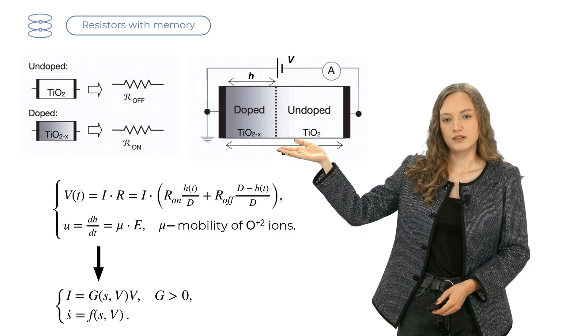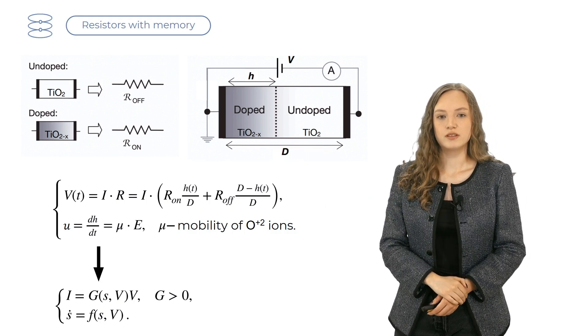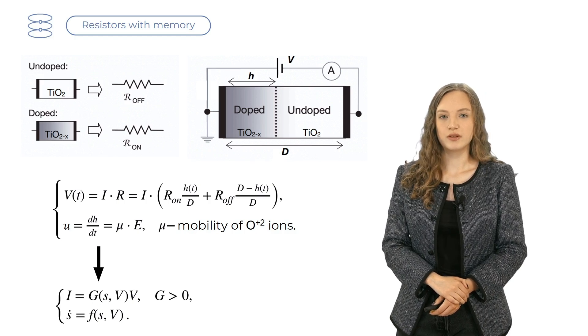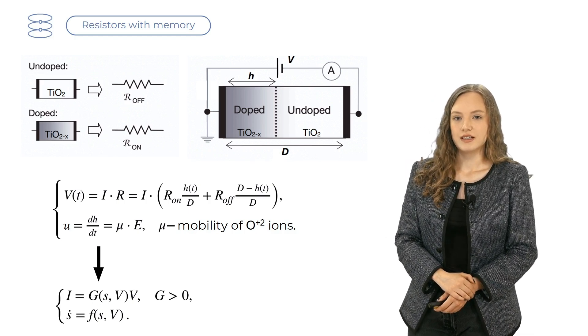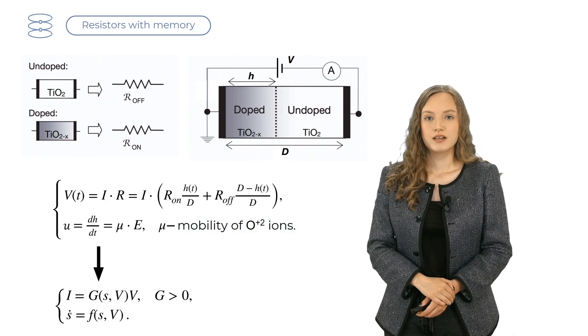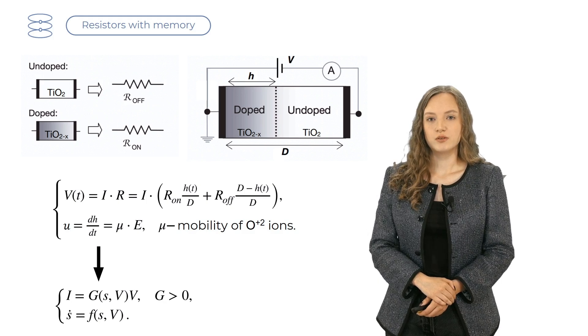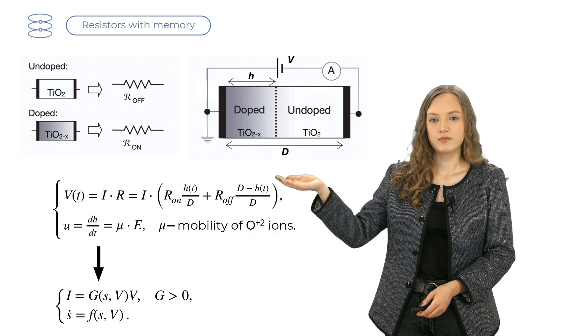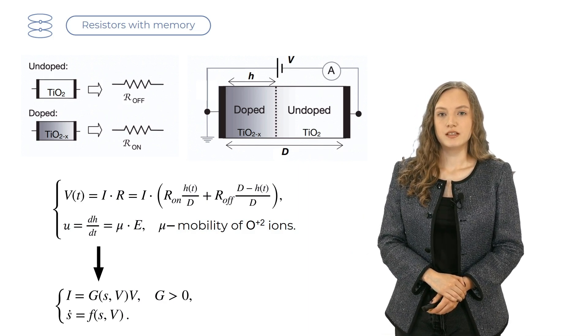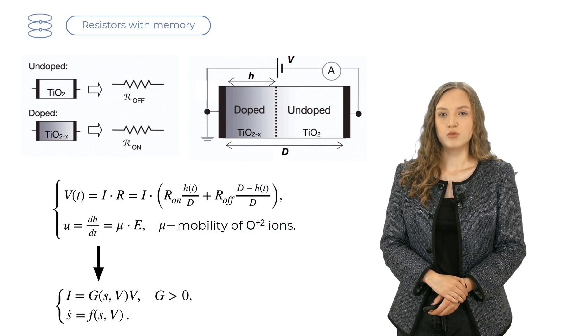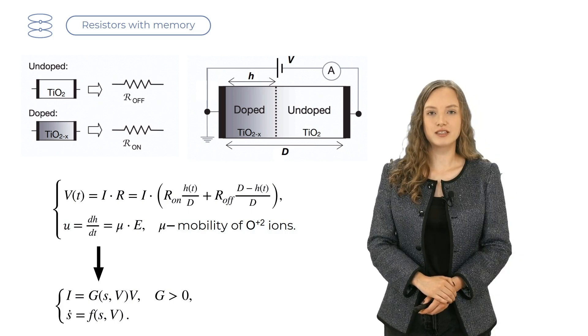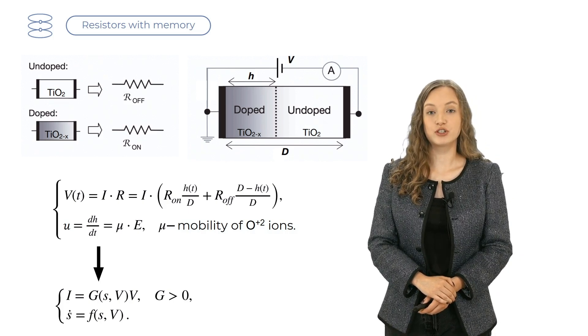The border of doped zone moves to the right when the voltage is increased, and it also can move to the left when we switch the polarity, as oxygen ions recombine back into TiO2. So, another equation we can write down is for the velocity U of this border, which is equal to the first derivative of H by time, and is equal to mobility of the ions μ times electric field strength E.